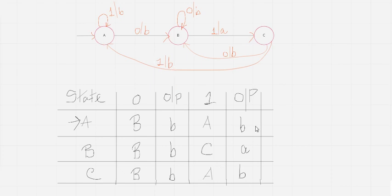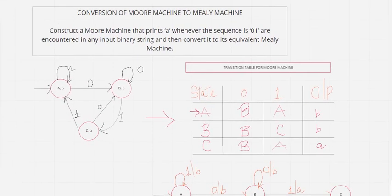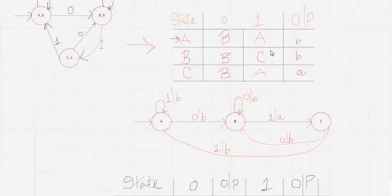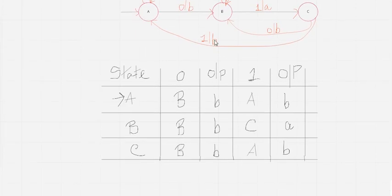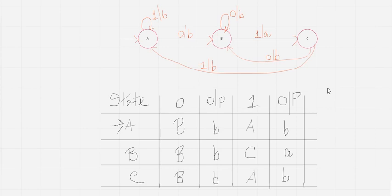So the process is clear: either you are asked to construct a Moore machine, or a Moore machine is given to you. First convert it into a state transition table, from that table draw the Mealy machine diagram as explained, and from that draw the state transition table for the Mealy machine. This is a good example of how to convert a Moore machine to a Mealy machine.